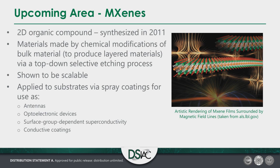Another upcoming area is MXenes — 2D inorganic compounds first synthesized in 2011 at Drexel University, made by chemical modifications of a bulk material to produce a layered surface. They have been shown to be scalable and can be applied to substrates via spray coating — imagine taking a solution in a spray can with a solvent and some MXenes and spraying an antenna onto a surface. MXenes are used in optical and optoelectrical devices as a transparent conducting electrode, have demonstrated surface-group-dependent superconductivity for niobium carbide, and can be used as conductive coatings — allowing you to simply spray something you want to shield and achieve shielding.